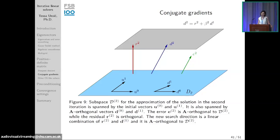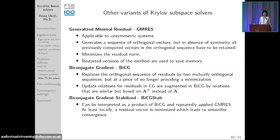CG eliminates the largest error components first, making it very efficient — you can stop after a fraction of the total steps and still have a good enough approximation of the solution. This is a very beneficial property: for a problem with 50 million cells you don't want to wait 50 million iterations. CG provides a good approximation in far fewer steps, limited by the eigenvalue spread of the matrix.